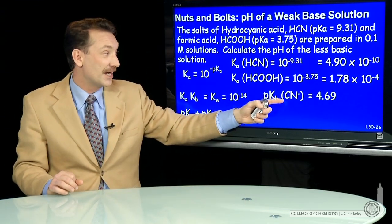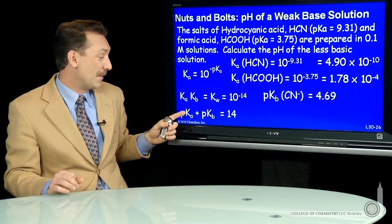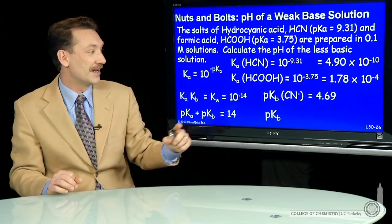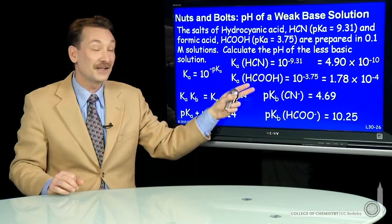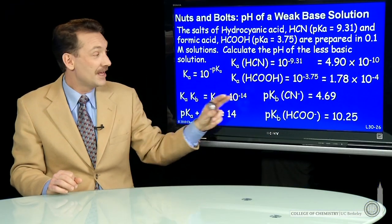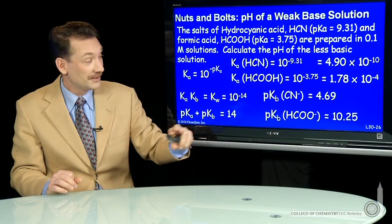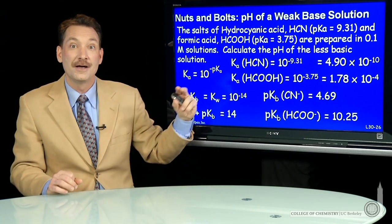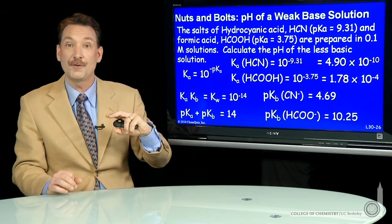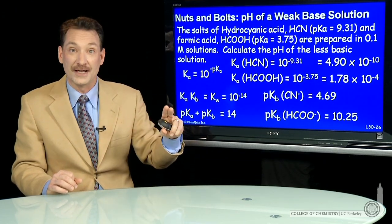Kb for CN minus is 14 minus 9.31 or 4.69. And Kb for HCOO minus, the formate ion, is 3.75, 14 minus 3.75 or 10.25. So now I have the relative base concentrations, the relative base strengths, the relative base strength of cyanide ion larger than the formate ion. So the formate ion is the weaker base.